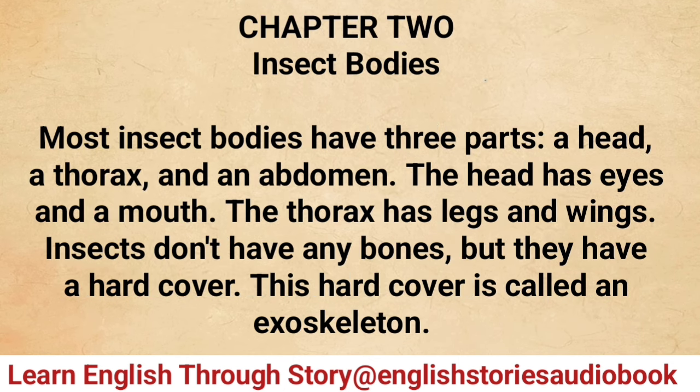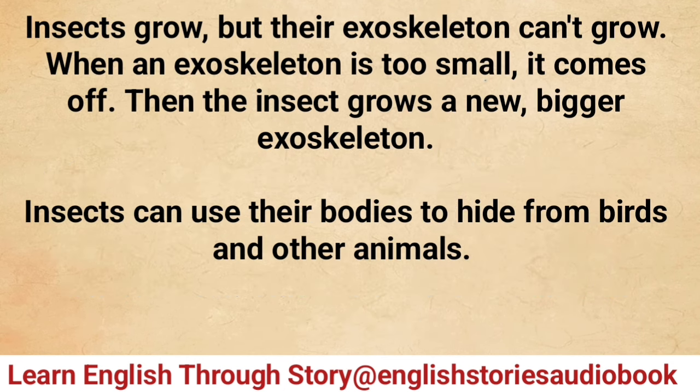Earthworms and leeches don't have legs — their bodies have lots of sections. They are annelids. Chapter two: Insect bodies. Most insect bodies have three parts: a head, a thorax, and an abdomen. The head has eyes and a mouth. The thorax has legs and wings. Insects don't have any bones but they have a hard cover called an exoskeleton.